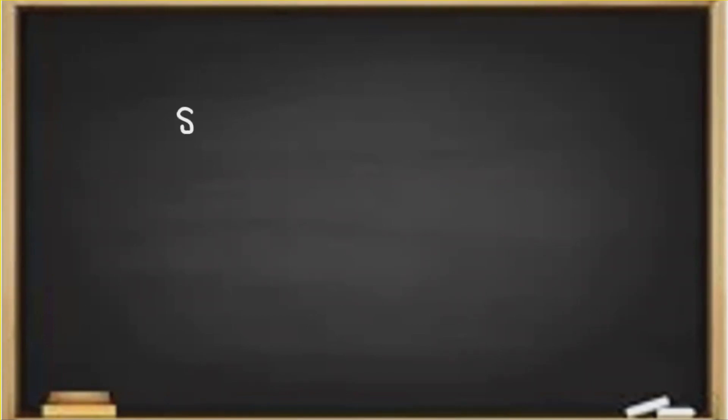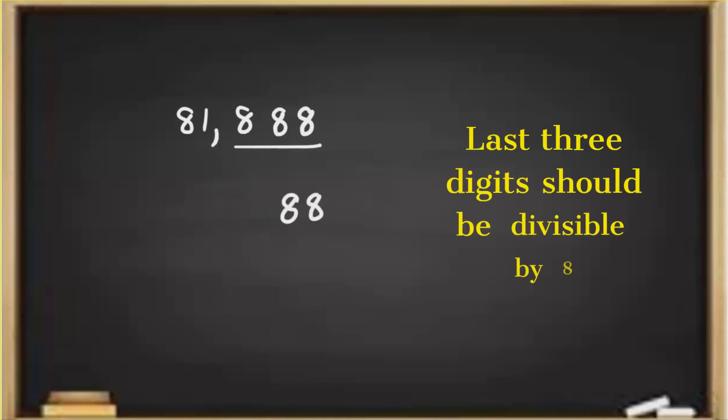For example, 81,888. The last three digits, that is 888, is divisible by 8. Because when you divide 888 with 8, you will get remainder equals to 0.